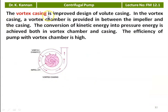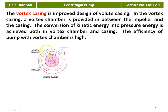The vortex casing is an improved design of the volute casing. In vortex casing, a vortex chamber is provided between the impeller and the casing. The conversion of kinetic energy into pressure energy is achieved both by the vortex chamber and the casing, so the efficiency of the pump with the vortex chamber is higher. There are two passages to convert kinetic energy into pressure: the vortex chamber and the volute casing. The passage is gradually increasing, which converts kinetic energy into pressure energy.